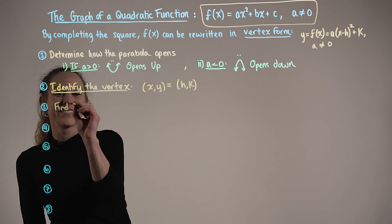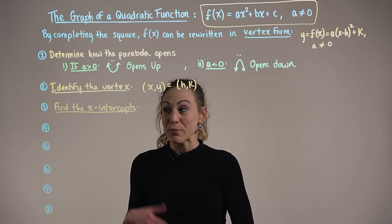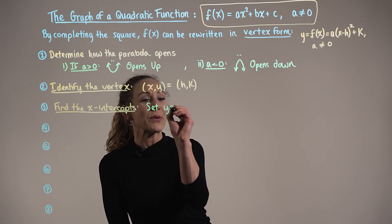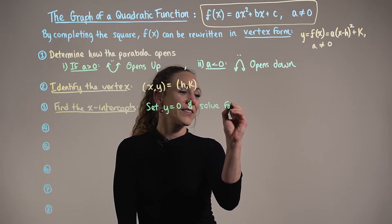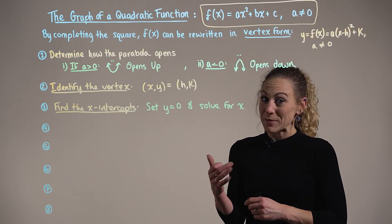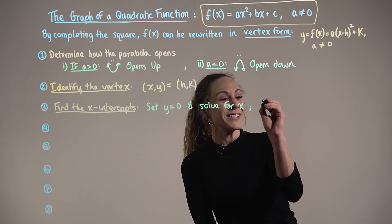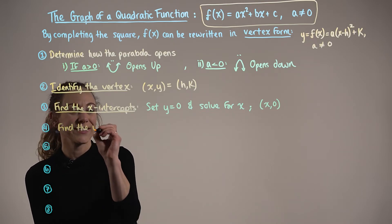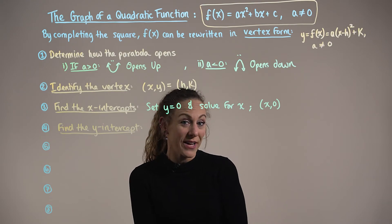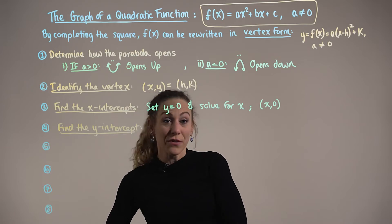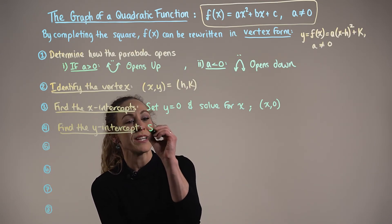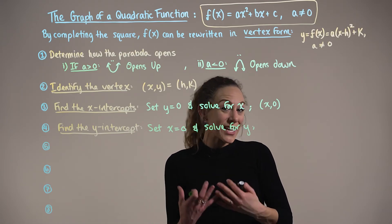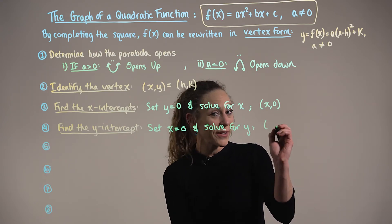Step three: finding the x-intercepts uses the same strategy as for linear functions — set y = 0 and solve for x. We write x-intercepts in the ordered pair form (x, 0). Step four: finding the y-intercept also uses the same method — set x = 0 and solve for y. We write the y-intercept in ordered pair form (0, y).